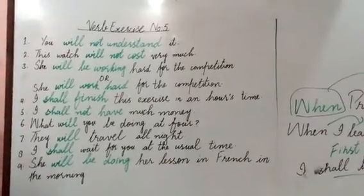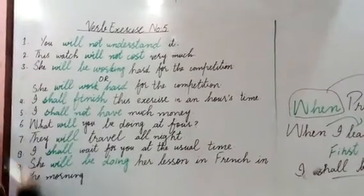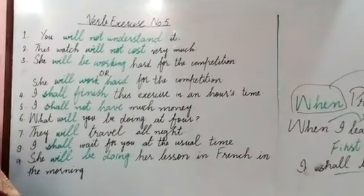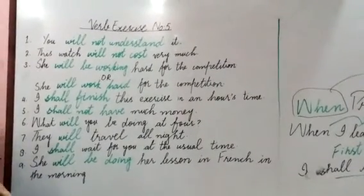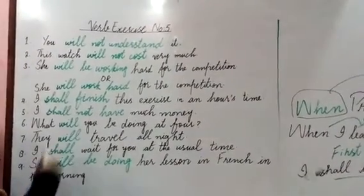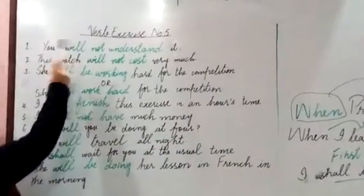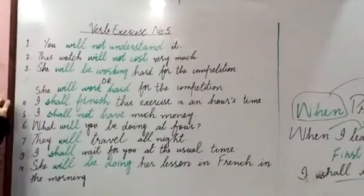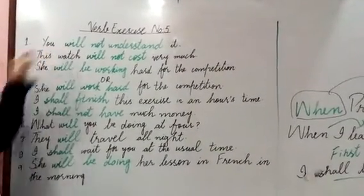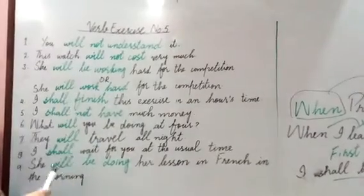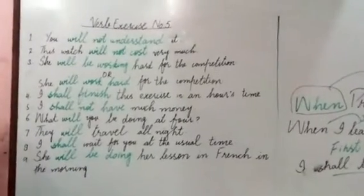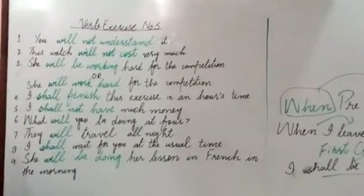The first sentence is: 'You will not understand it.' We have used future indefinite tense here. Have you observed that I translated this sentence using my own native language? This shows that the GTM method leads us to future indefinite tense here.